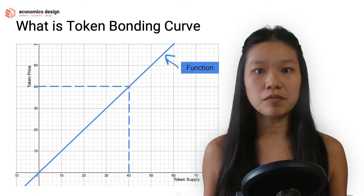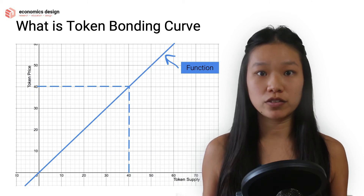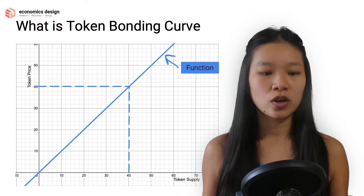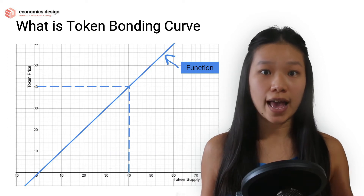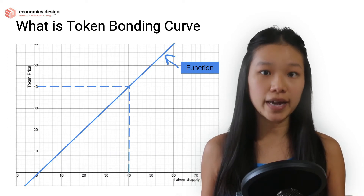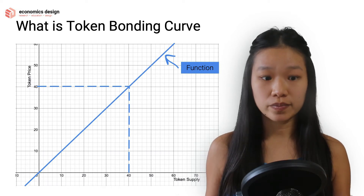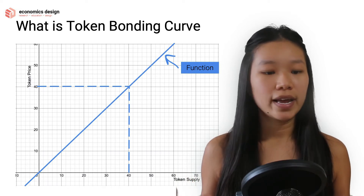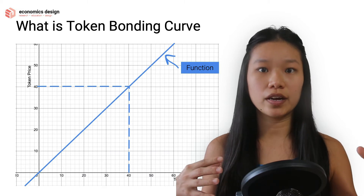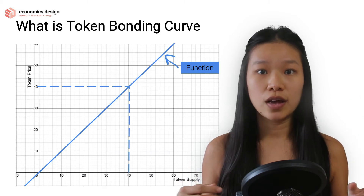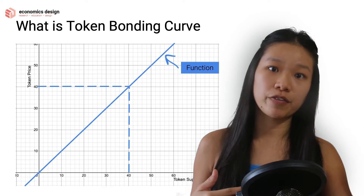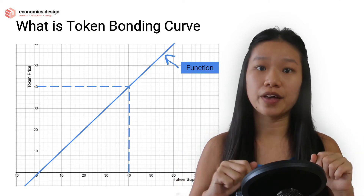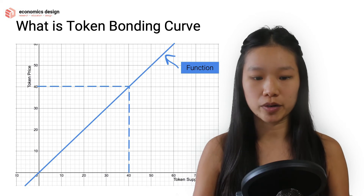To keep things simple, we're looking at a very simple 2D graph. You have an x-axis and a y-axis, where the x-axis will be the token supply and the y-axis will be the token price. So token bonding curves show how the supply will affect the price — when the supply changes, how does it affect the price? That relationship is found in that line, that function.